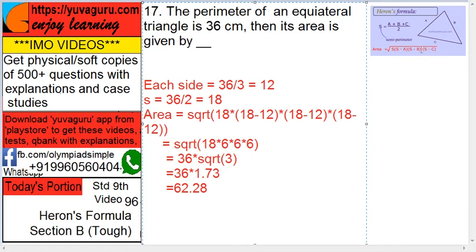into S minus B into S minus C. 18 minus 12 is 6, three times, right? So square root of 18 into 6 into 6 into 6. Two 6s become 1, and this 18 is 6 into 3, so 6 and 6...